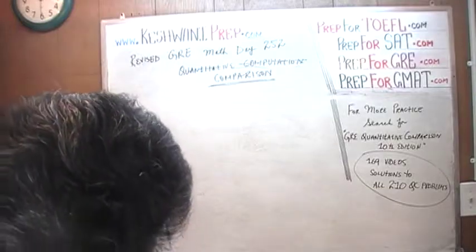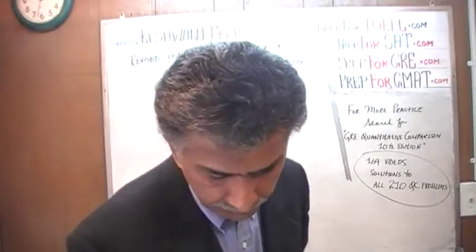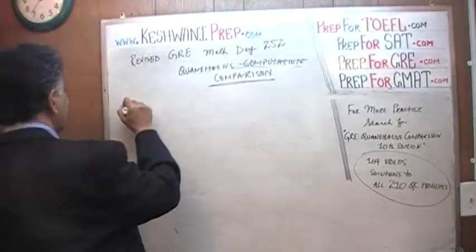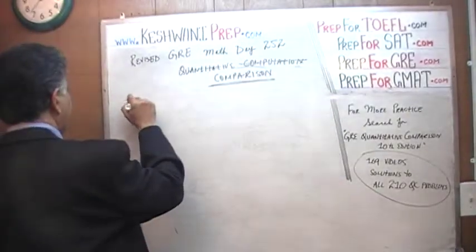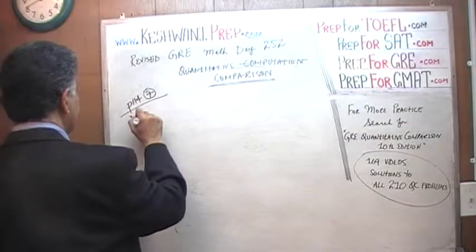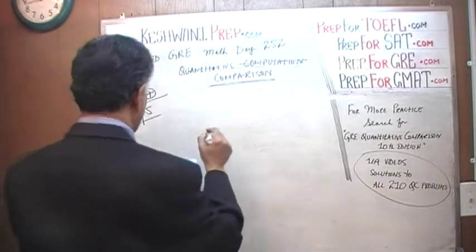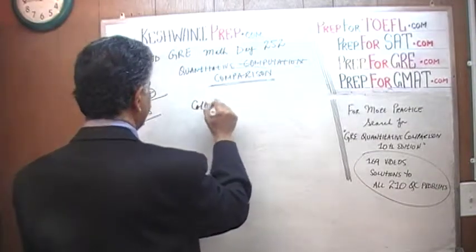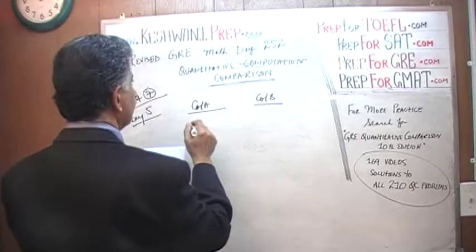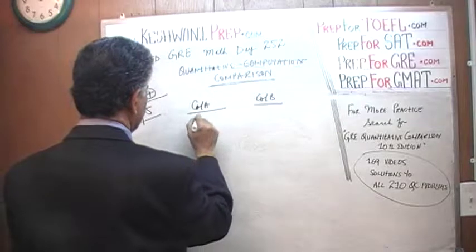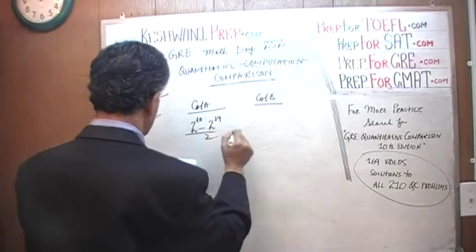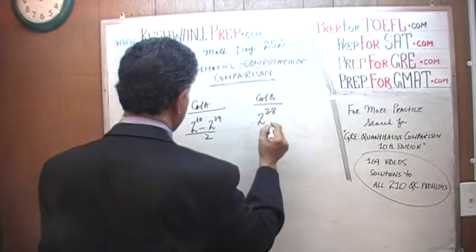Next — page 114, number 7, something we did on day number 5. Here is column A: two raised to the 30 minus two raised to the 29, all over two. Column B: two raised to 28.